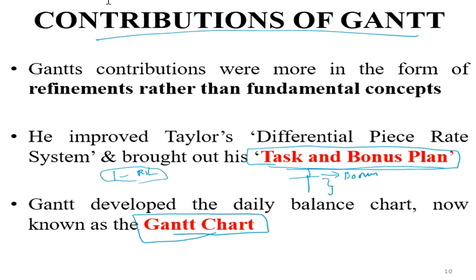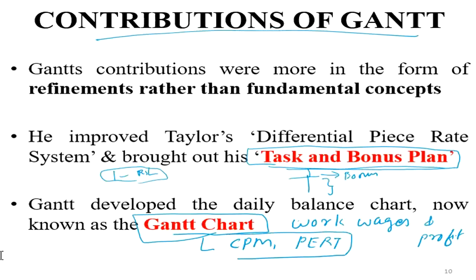Henry Gantt wrote a book called 'Work, Wages and Profit.' He also developed the Gantt chart, and examples of its application include CPM. All of this was developed by Gantt.